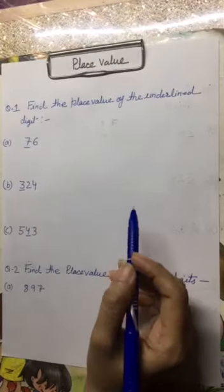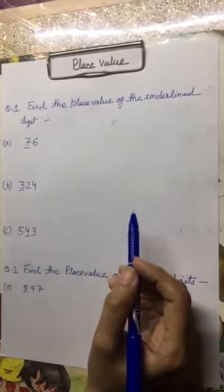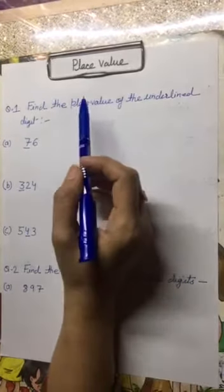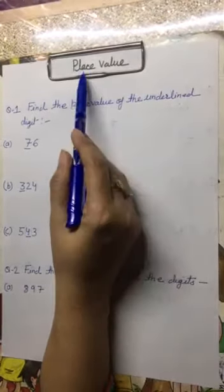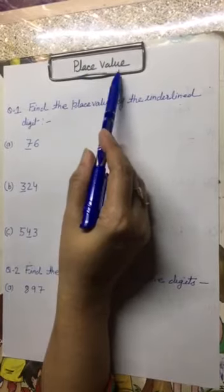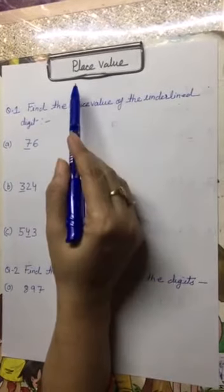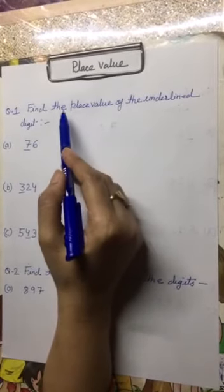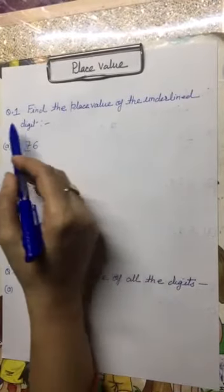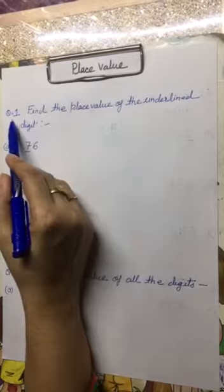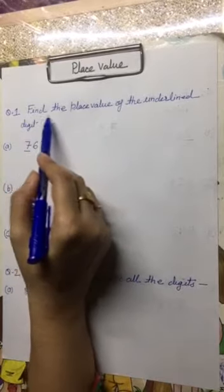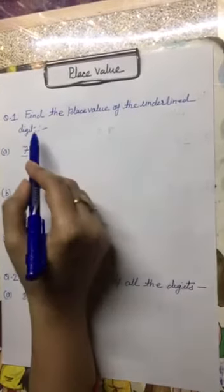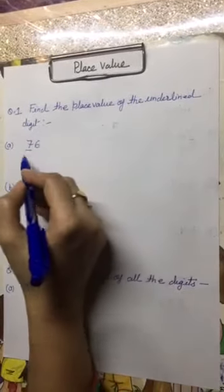Good morning students. Welcome to the revision class of maths and today's topic is place value. We will revise the topic with the help of few questions. So question number 1 is: find the place value of the underlined digit.